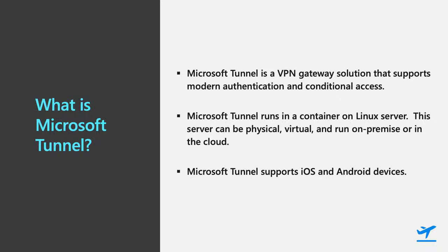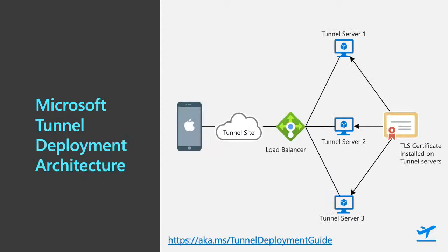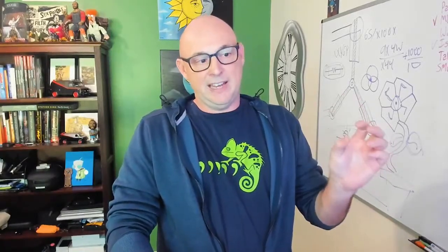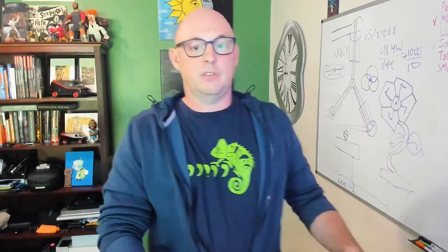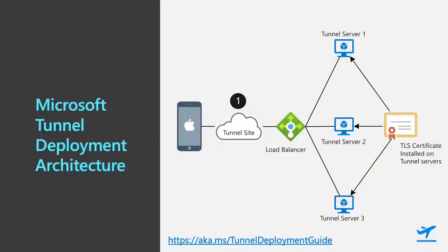From a client perspective, it provides access and supports iOS and Android devices. From a deployment architecture perspective, there are four basic things to understand. First is the Tunnel site — when we build this out, the site ends up being the FQDN or IP address for a host or a load balancer, usually a load balancer. That Tunnel site configuration item is used by the client to connect to your infrastructure.